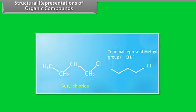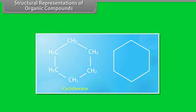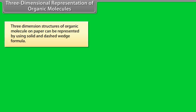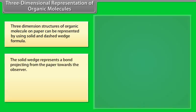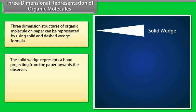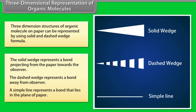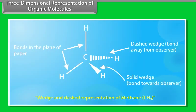Examples of bond-line structures include butyl chloride, propene, cyclohexane, diethyl ether, and dimethylamine. Three-dimensional structures of organic molecules on paper can be represented using solid and dashed wedge formulas. The solid wedge represents a bond projecting from the paper towards the observer, the dashed wedge represents a bond away from the observer, and a simple line represents a bond in the plane of paper. For example, methane.